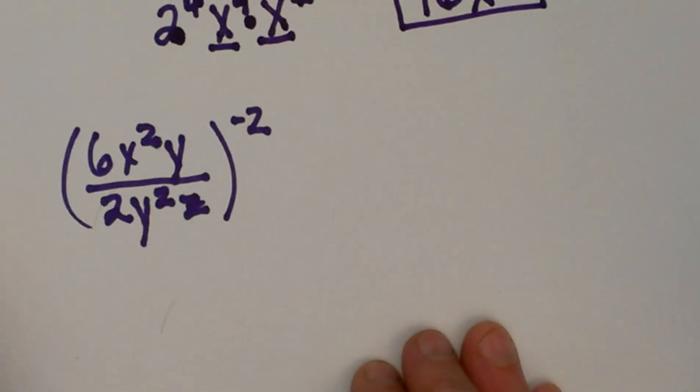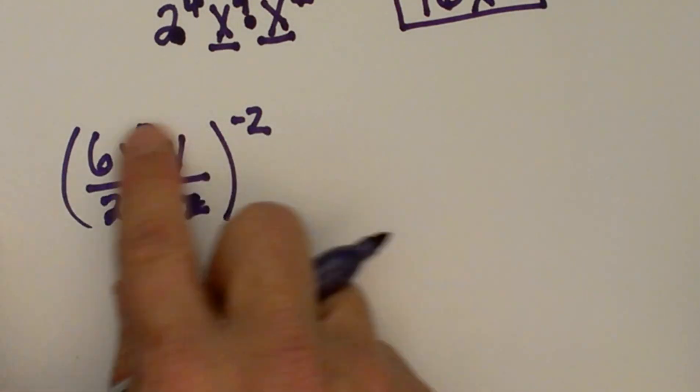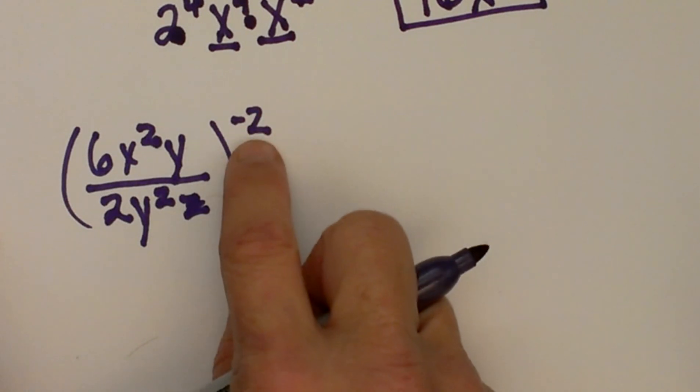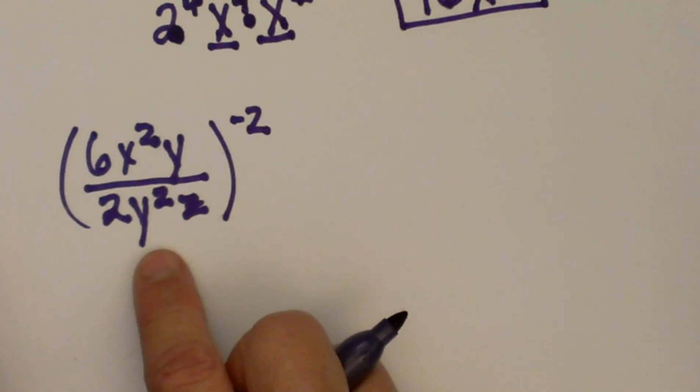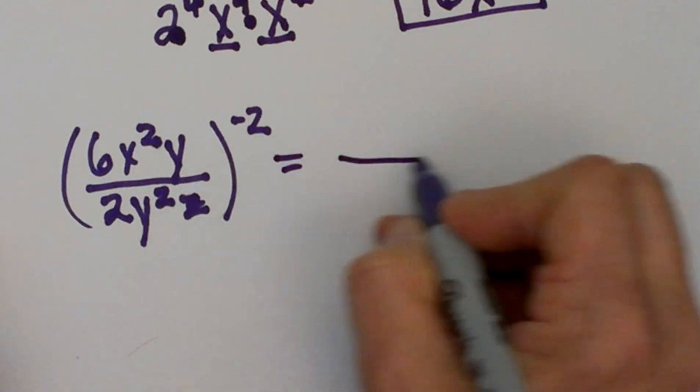So let's look at one more of those. We'll take this one a little bit more quickly. Okay, we've got a fraction and the entire thing is being raised to the negative second, so there are many ways to do this. But what I like to do is take what I've got and simplify it first. So I'm going to take anything inside here that I can and reduce it.